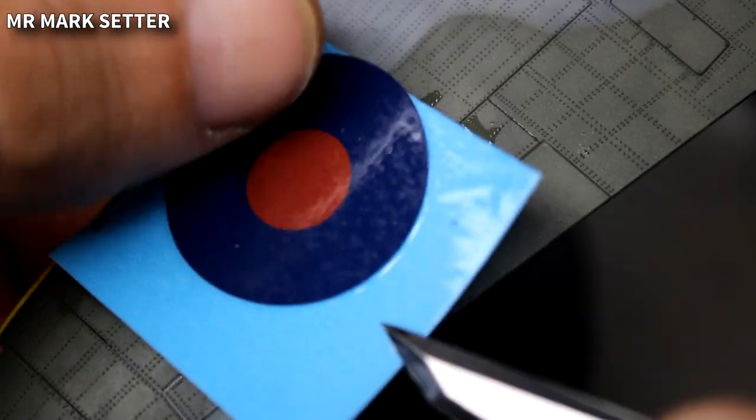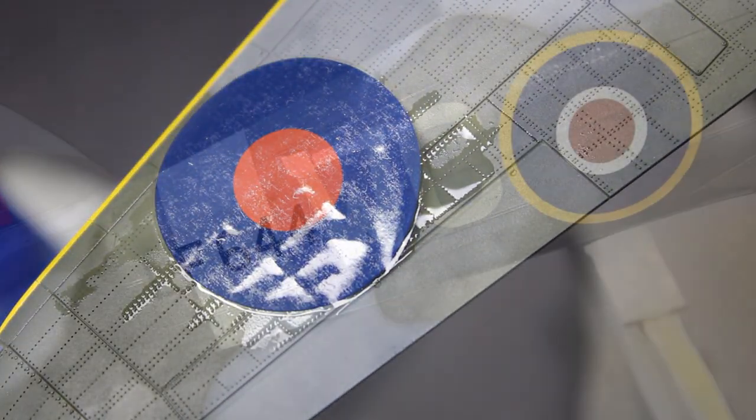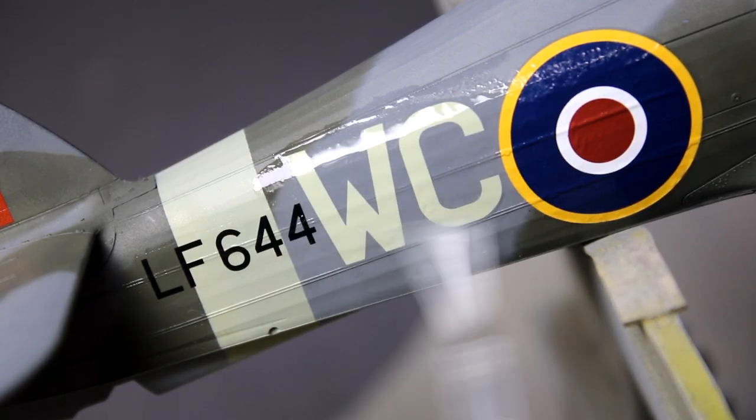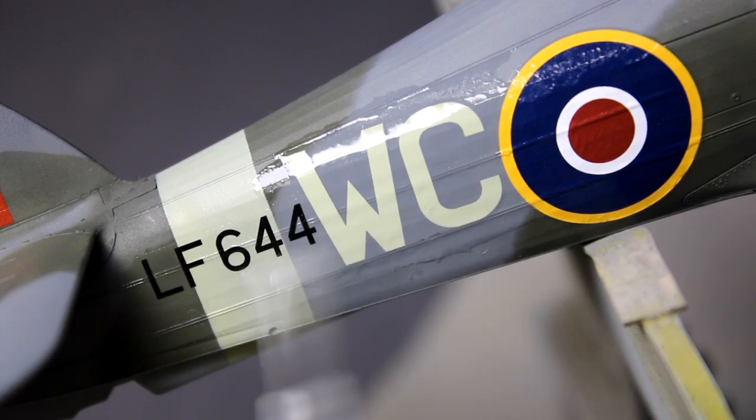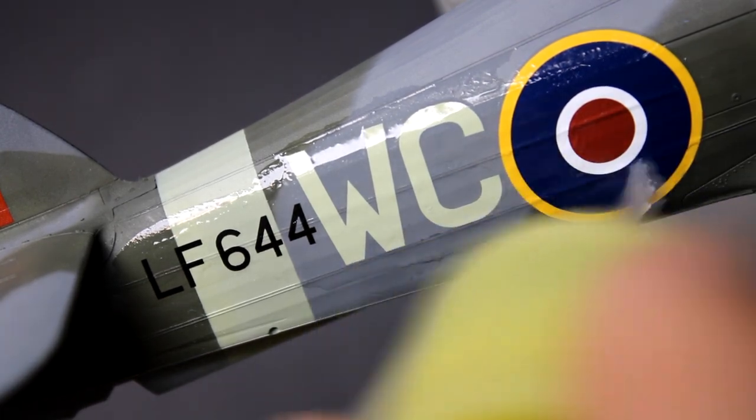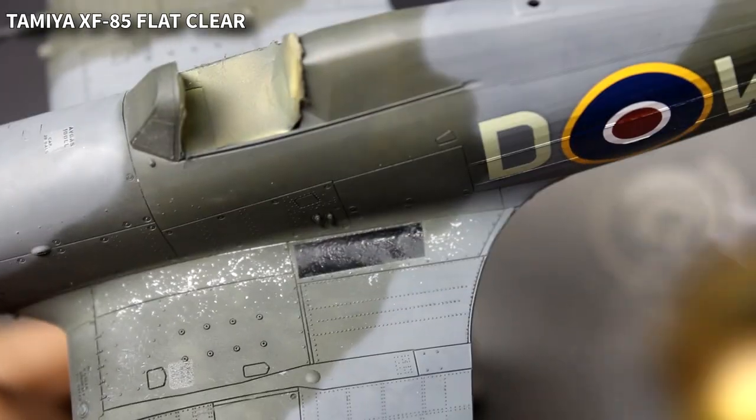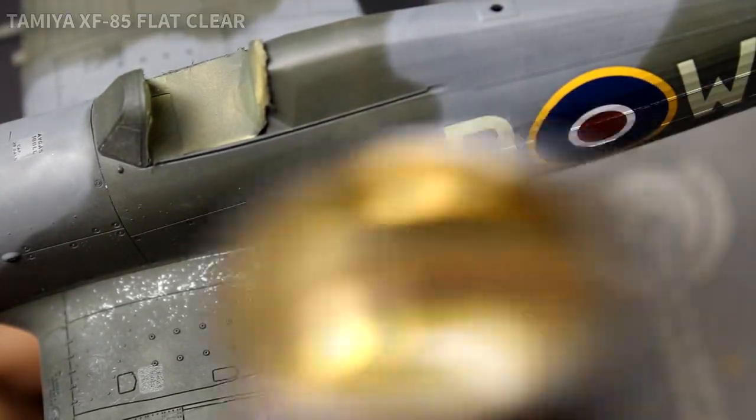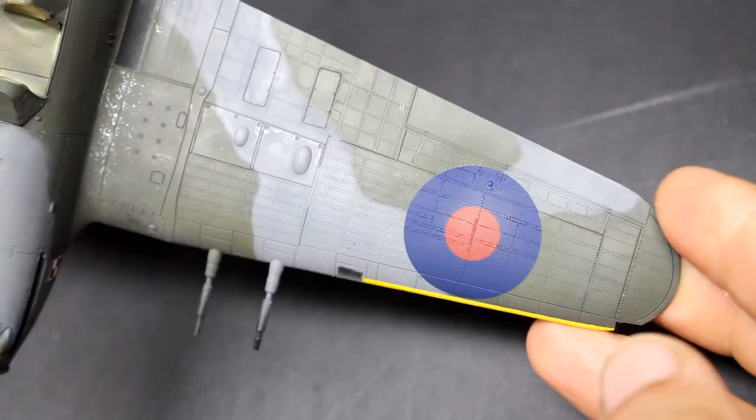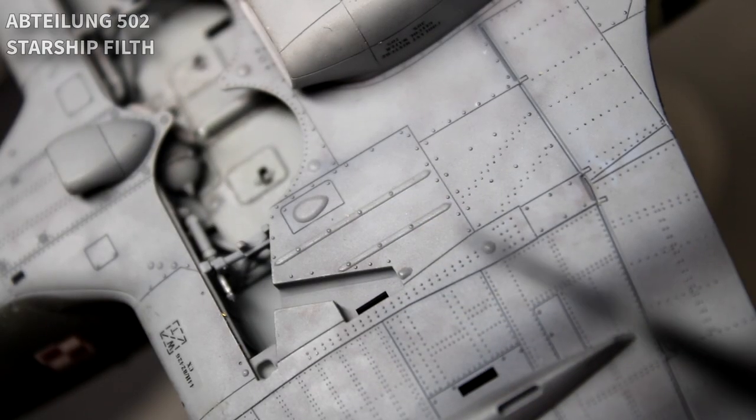One big concern I had for this model was how the decals were gonna go down over all the raised detail. I've had some issues in the past with decals that would not seat fully down, but by using some Mr. Mark Setter and then using some Tamiya Super Strong setting solution, these decals had no problems going down over the details. It just took two or three rounds of Tamiya Super Strong to get those to fully sit down. Once all the decals were down, it was time to lock everything in place with a flat coat. These decals performed very nicely and they look like they're painted on.